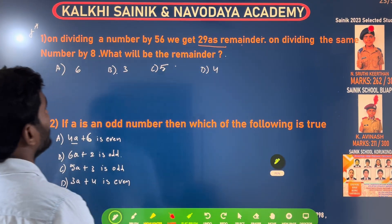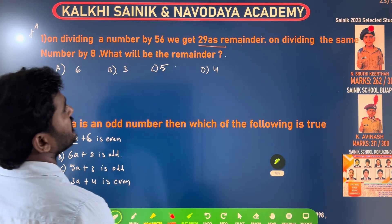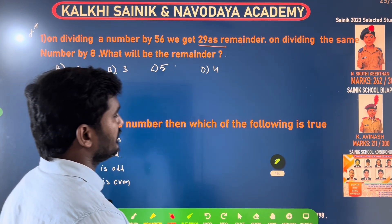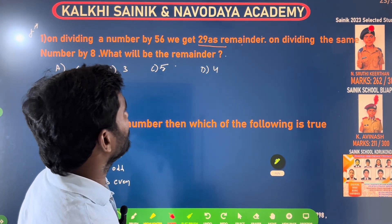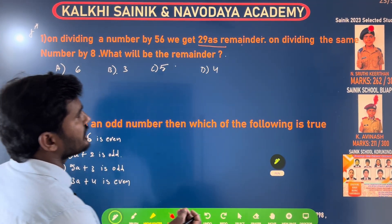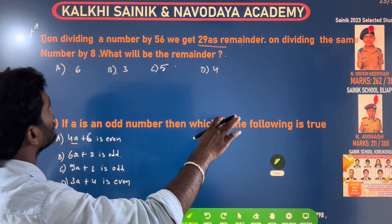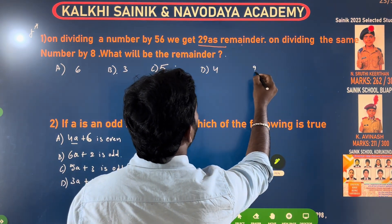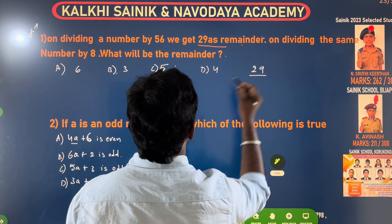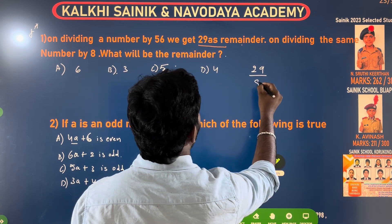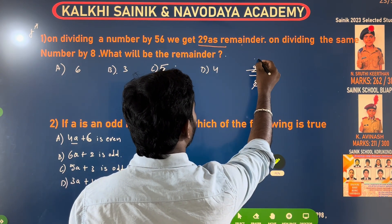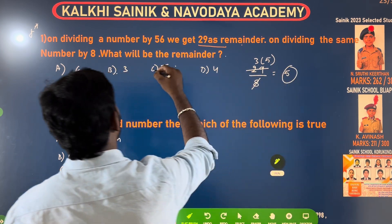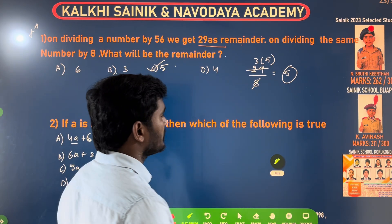Class local. On dividing a number by 56, we get 29 as the remainder. On dividing the same number by 8, what will be the remainder? If a number divided by 56 gives remainder 29, then dividing by 8: 8 goes into 29 three times — 3 times 8 is 24 — remainder is 5. Answer is 5. Option C.